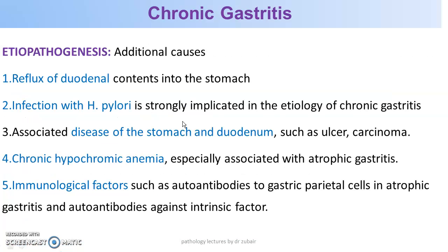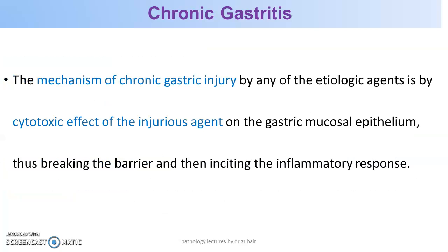Additional causes include reflux of duodenal content into the stomach, infection with H. pylori, associated conditions such as ulcers and carcinomas, chronic hypochromic anemias associated with atrophic gastritis, and immunological factors such as autoantibodies to parietal cells and autoantibodies against the intrinsic factor. The mechanism of chronic gastric injury is the cytotoxic effect of injurious agents on the gastric mucosal epithelium, breaking the barrier and inciting an inflammatory response.